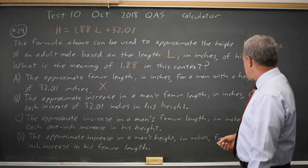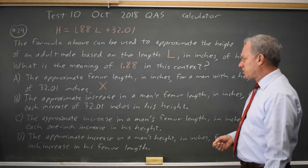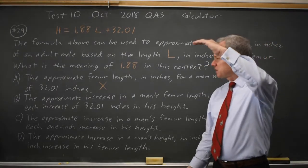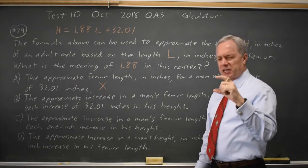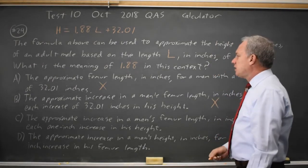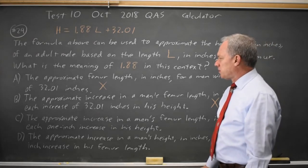Increase in femur length in inches for each increase of 32 inches in height. If your height goes up by 32 inches and your femur goes up by 1.88 inches, that does not make sense in the real world or in the context of the problem.